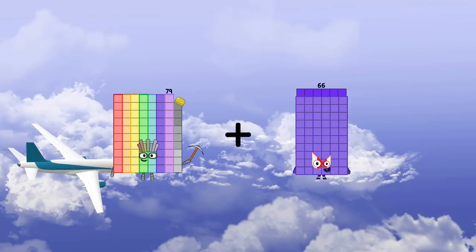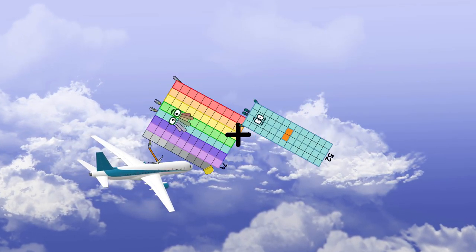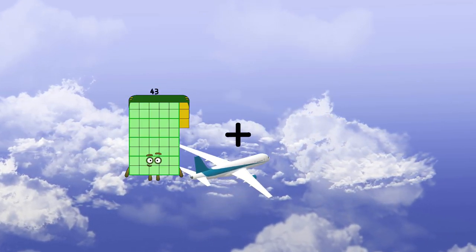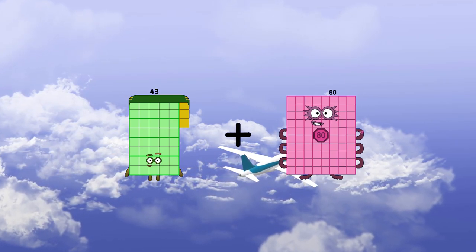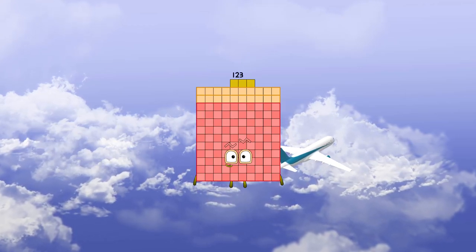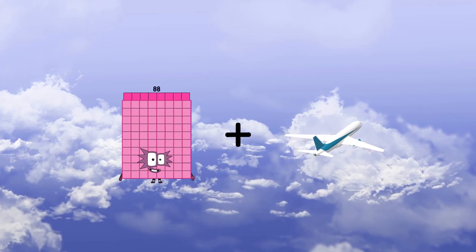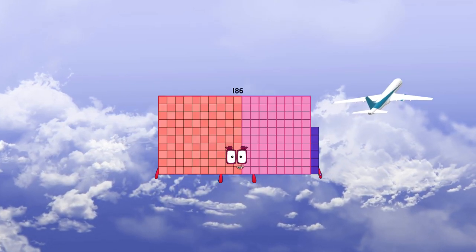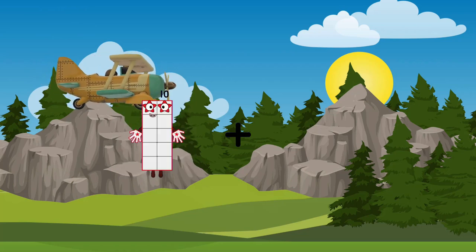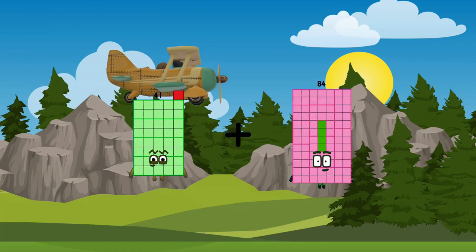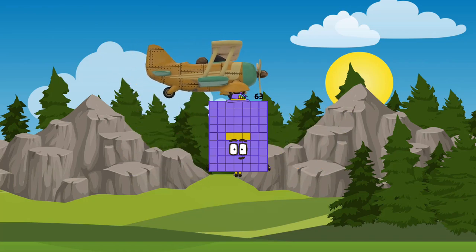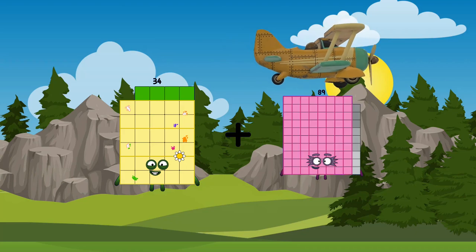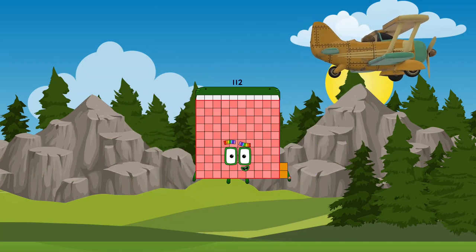79 plus 52 equals 131. 43 plus 80 equals 123. 88 plus 98 equals 186. 41 plus 22 equals 63. 34 plus 78 equals 112.